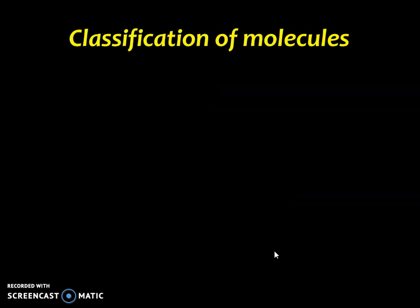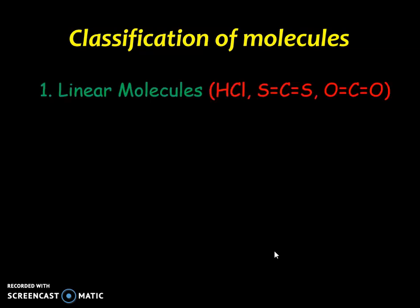Molecules are classified into different groups according to their principal moment of inertia. The first one is the linear molecules like HCl, carbon disulfide, carbon dioxide, etc. Here, all the atoms are arranged in a straight line.